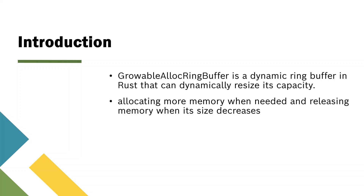The growable lock ring buffer is a custom data structure designed to combine the advantages of a ring buffer with dynamic resizing capabilities in the Rust programming language. This buffer provides a circular array-like structure that allows for efficient insertion and removal of elements. Unlike a traditional ring buffer with fixed capacity, the growable lock ring buffer can dynamically resize itself, allocating more memory when needed and releasing memory when its size decreases.